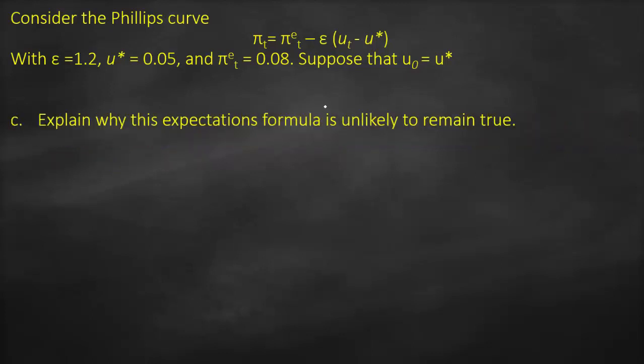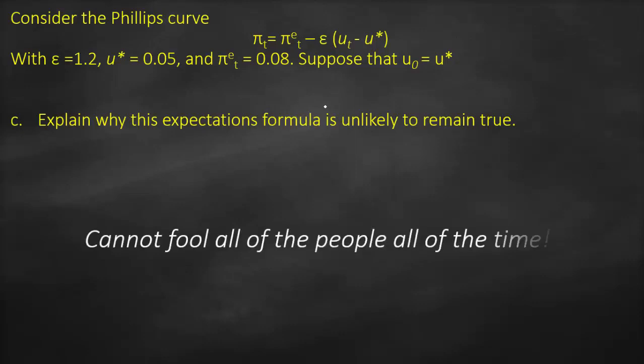The next part asks why fixed expectations are unlikely to remain true. Because officials cannot fool the public all the time. If they claim inflation is low while it is actually high, people will not believe it for long, because once they go to the supermarket they discover prices are higher. You can fool them in the short term but not for a long period of time.